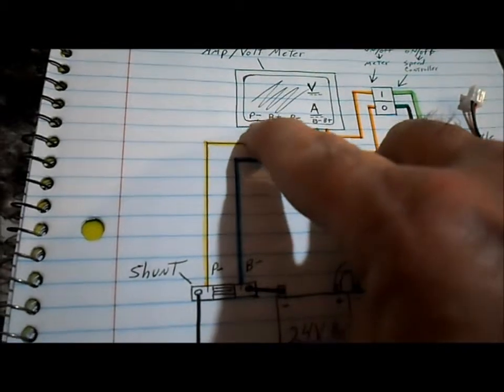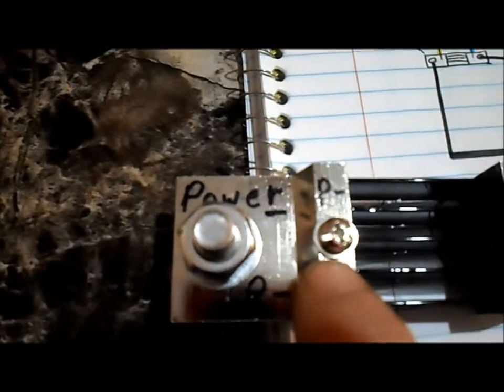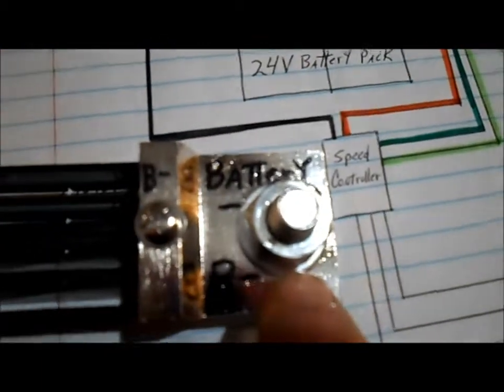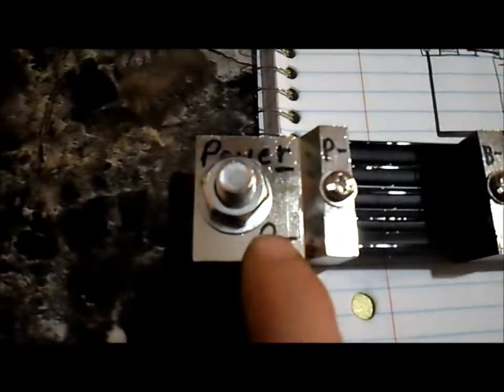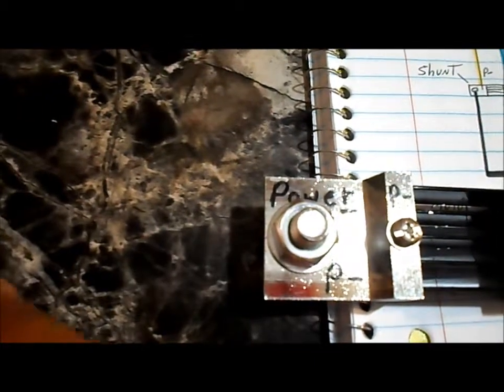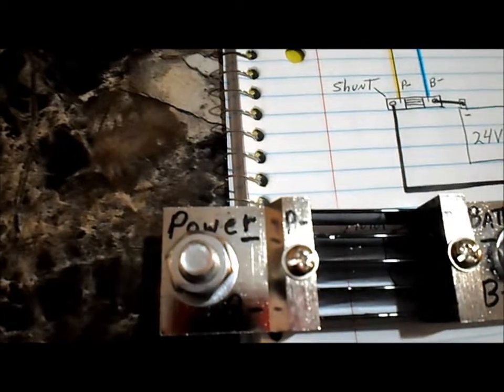So yellow is your P minus or power minus. That's this side of the shunt. P minus stands for power minus. B minus is battery minus. That hooks to the battery. P minus is power minus. That's still minus but it goes to the power. Whether it be the motor or the speed controller or whatever the load would be.